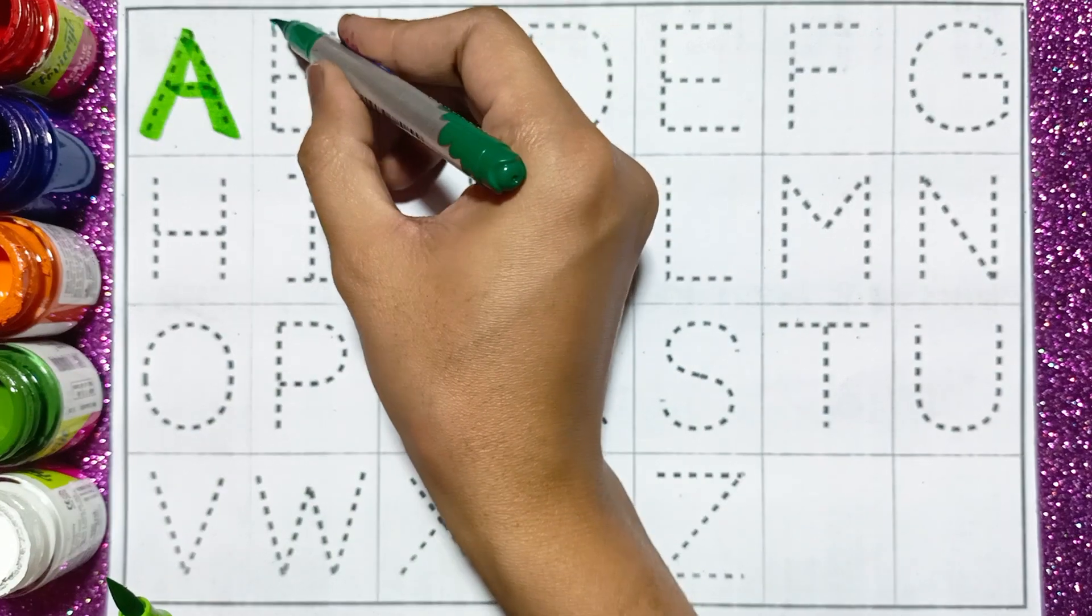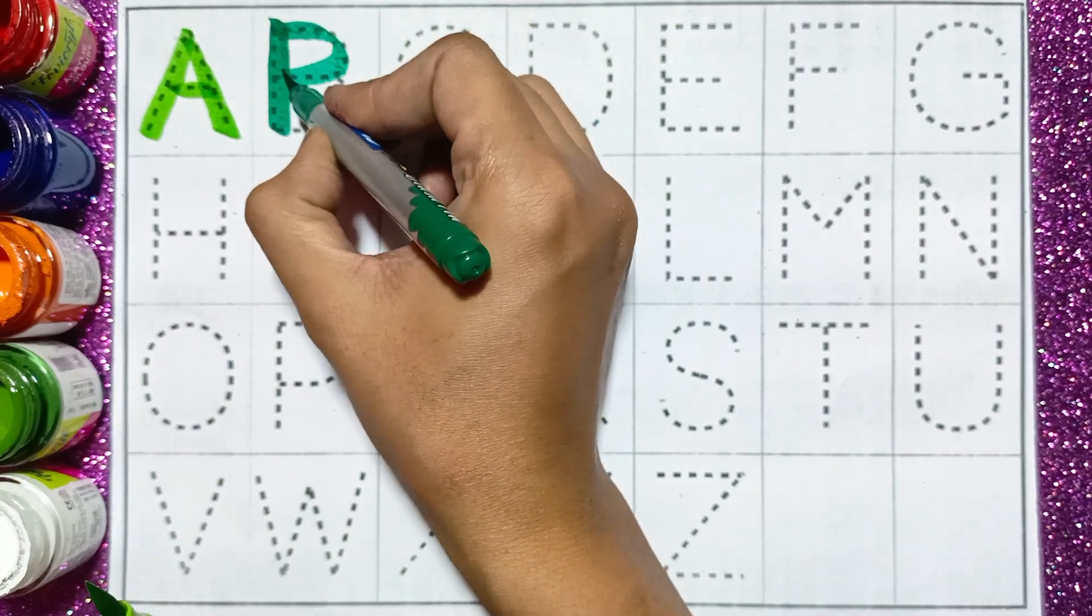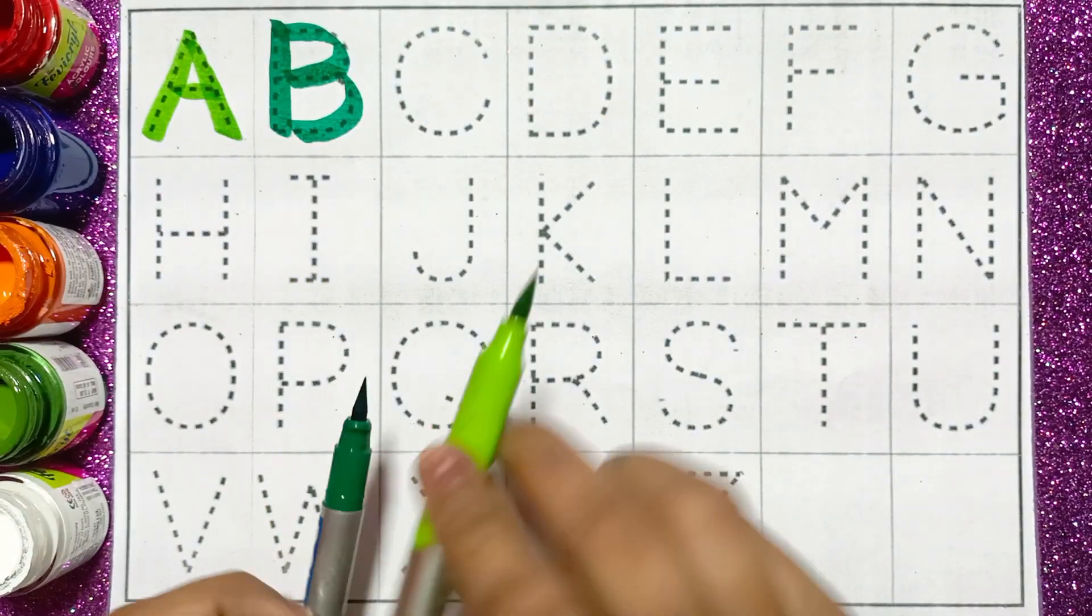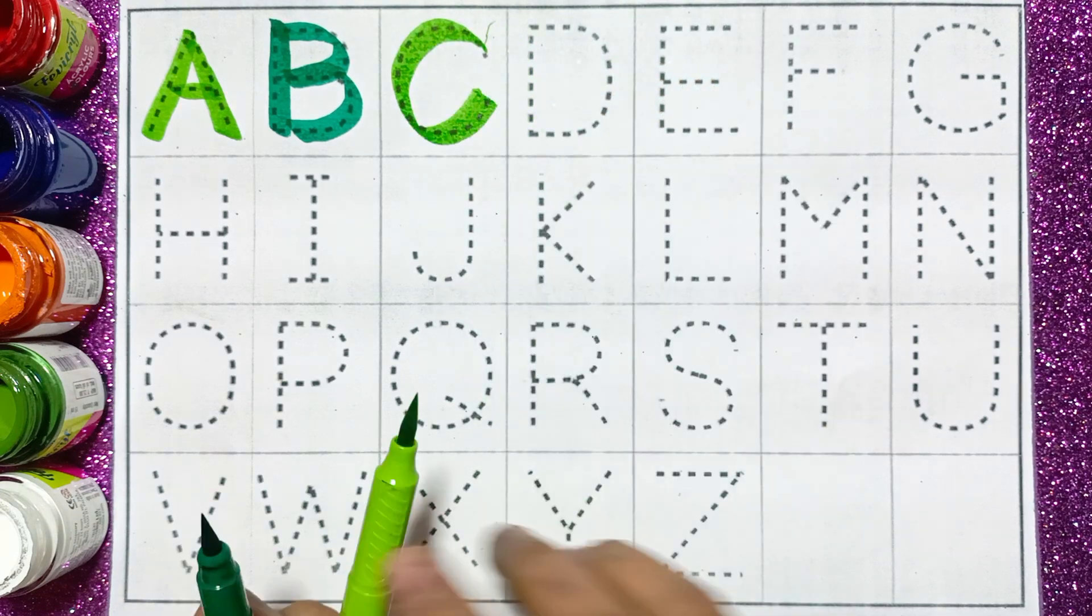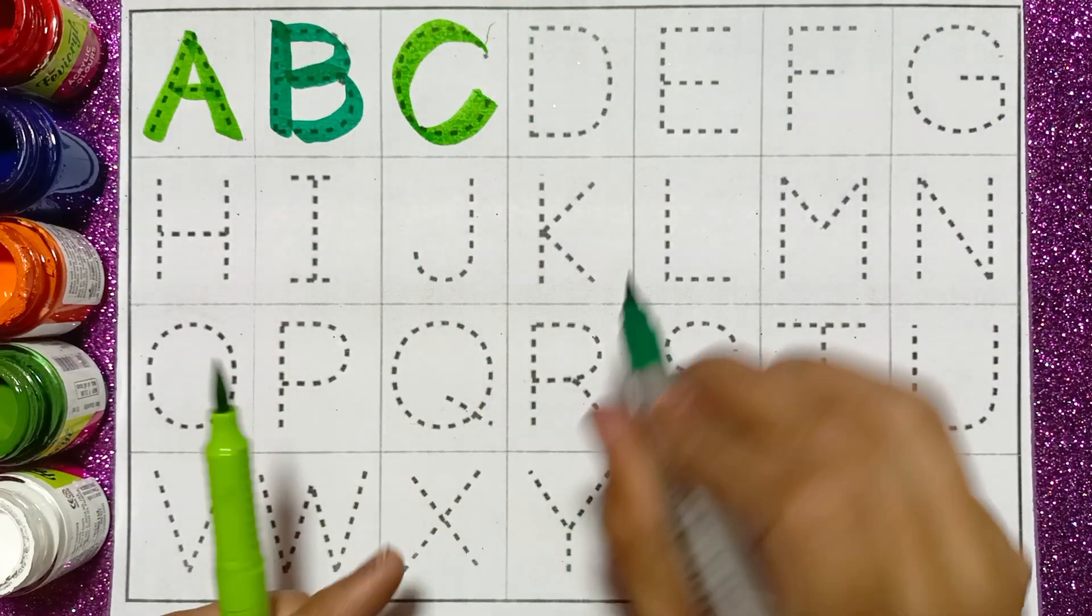Light green color. B for Ball. Dark green color. C for Cat. D for Dog.